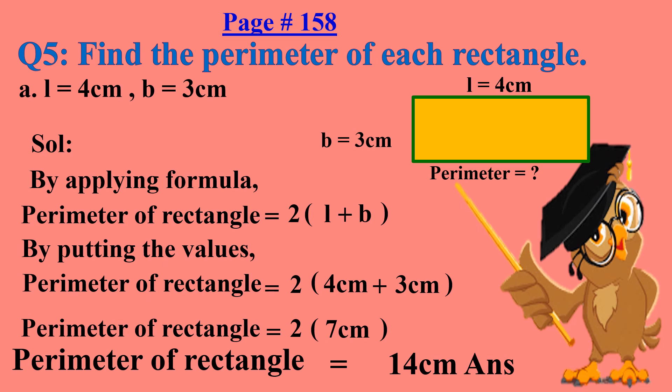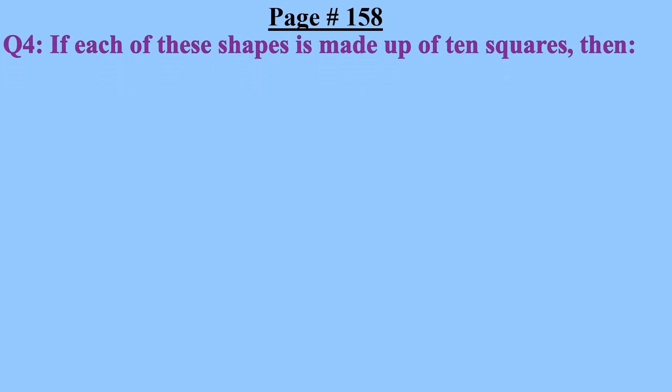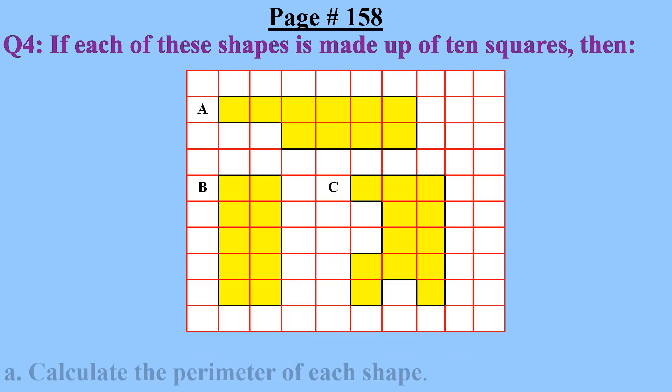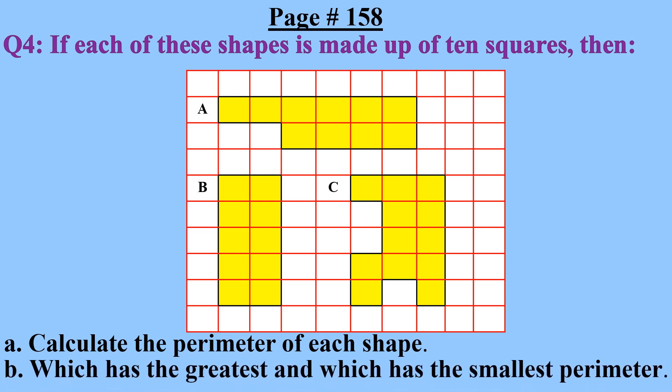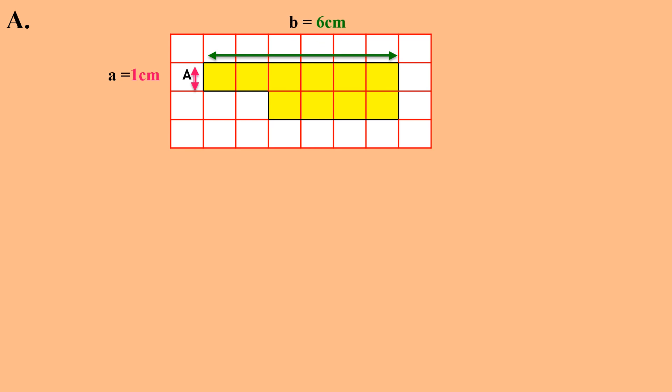Now I will solve question number 4: If each of these shapes is made up of 10 squares, calculate the perimeter of each shape — which has the greatest and which has the smallest perimeter. Two shapes are given. I will solve the irregular shape first. We add all sides to find the perimeter of an irregular shape. I put arrows to help find the measurement of each side. In this grid, we count the boxes: A equals 1 cm, B equals 6 cm, C equals 2 cm, D equals 4 cm, E equals 1 cm, F equals 2 cm.